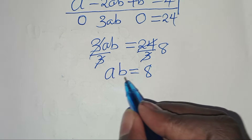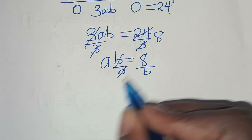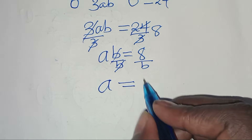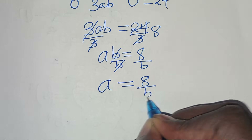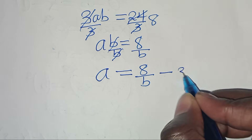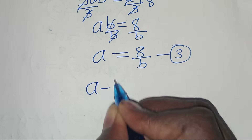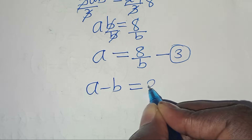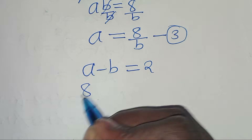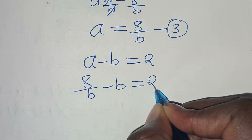Making a the subject of the formula by dividing both sides by b gives us a equals 8 over b. Let's call this equation 3. Substituting into equation 1, we have 8 over b minus b equals 2.